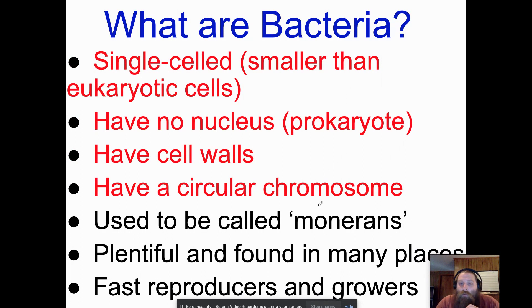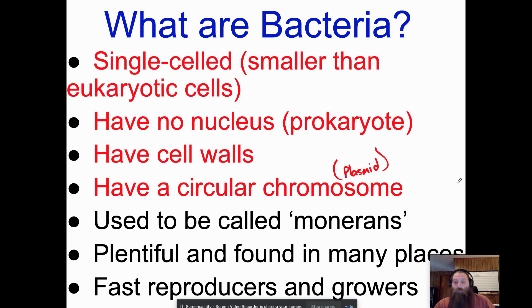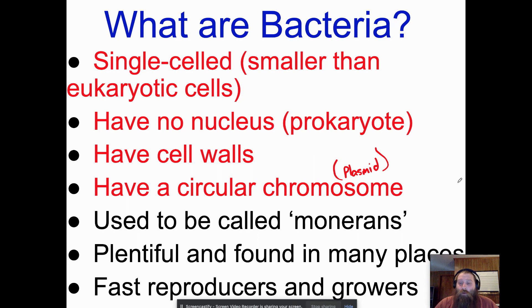Bacteria are single-celled organisms. They are smaller than eukaryotic cells, they do not have a nucleus — which means they are prokaryotes — they have cell walls, and they have a circular chromosome, which we call a plasmid. Back in the day they were called monerans, but that's just an older name. They are plentiful and found everywhere: in puddle water, under your seat, on your walls, on your skin. They reproduce very rapidly and have a quick life cycle to match.